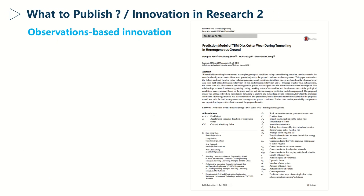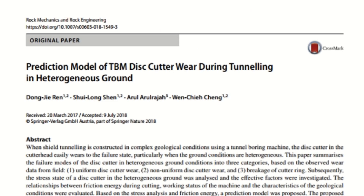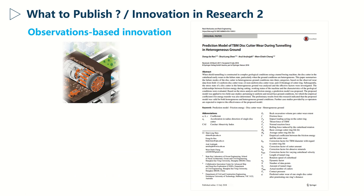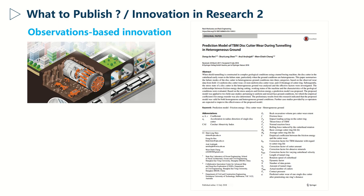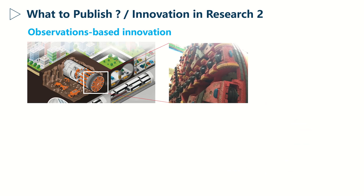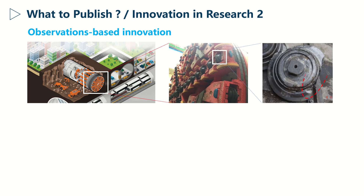Let's see an example of observation-based innovation, based on this paper: 'Prediction model of TBM disc cutter wear during tunneling in heterogeneous ground.' Normally, to build a tunnel, a machine called a tunnel boring machine or TBM is needed. It's the face of the machine that's responsible for the excavation, and as you can see, it has plenty of disc cutters on it. The author noticed that the disc cutters were prone to severe damage during the construction process.